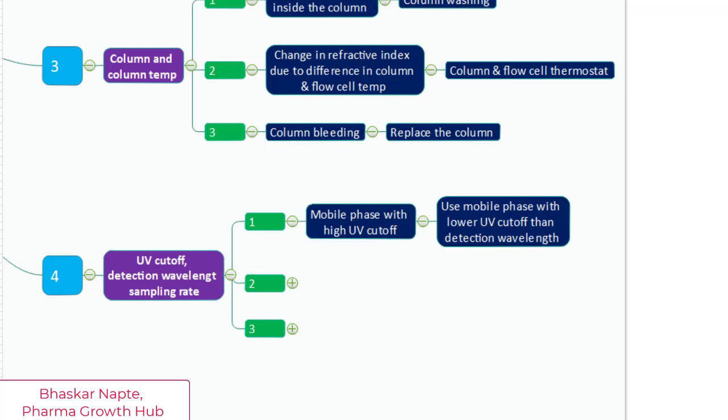The more is the UV cutoff, you will get more noise. So use HPLC grade solvent. It is also very important which grade of solvent and salt you are using. Because it has been seen that if you use secondary grade salt or solvent, that can increase your baseline noise. So the underlying message is your UV cutoff of mobile phase should be lower than the detection wavelength.